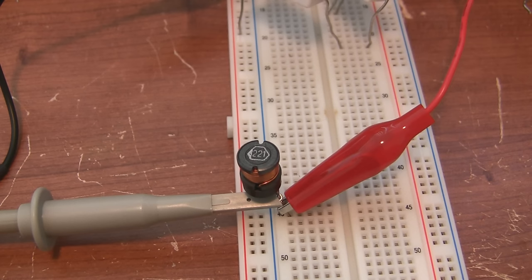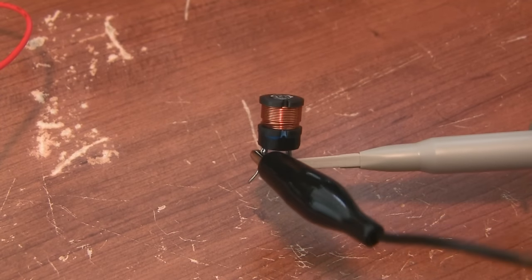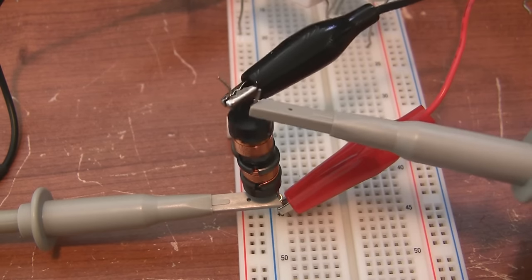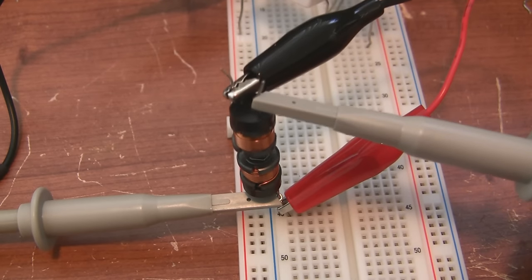And to prove to you that all this happens because of expanding and collapsing magnetic fields, I'm going to feed a square wave into this unshielded inductor here. And I'm going to use another inductor as a magnetic probe, so I can view any magnetic field changes on the oscilloscope.